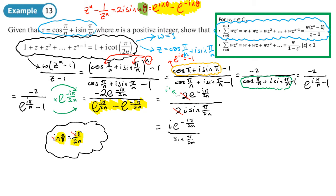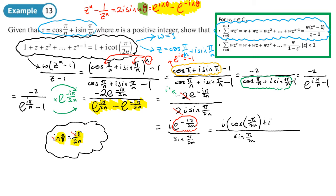We're now going to convert back to cosine form. The bottom is already sin(π/2n). For the top, e^(−iπ/2n) in trig form has argument −π/2n, giving cos(−π/2n) + i·sin(−π/2n). So we have i × [cos(−π/2n) + i·sin(−π/2n)] all over sin(π/2n).